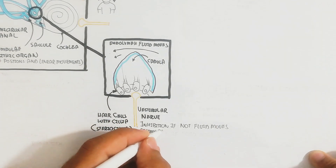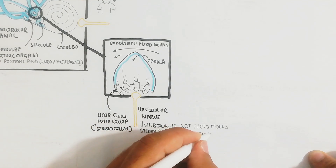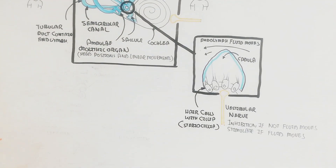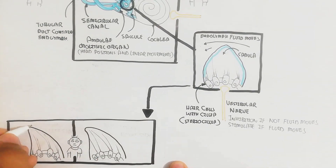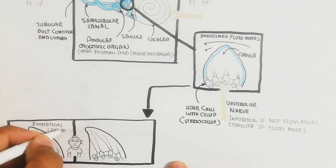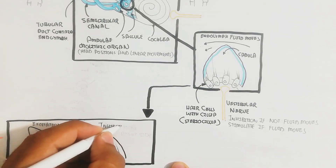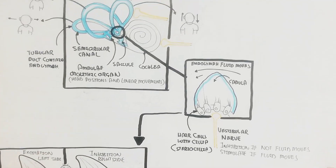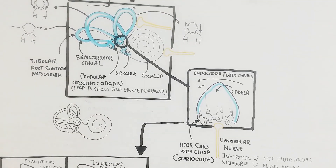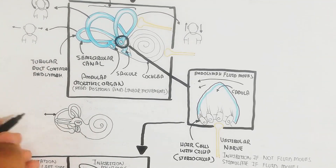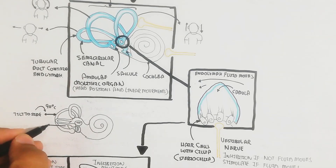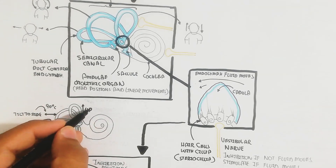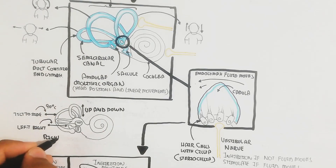The hair cells contain cilia, and the vestibular nerve detects the motion of the endolymph fluid. When the fluid moves, it causes initial inhibition on one side. If the fluid moves toward one side, there is excitation on the left side and ultimately inhibition on the right side of the head, because the right side semicircular canal corresponds to the left, based on up-down and left-right movements.